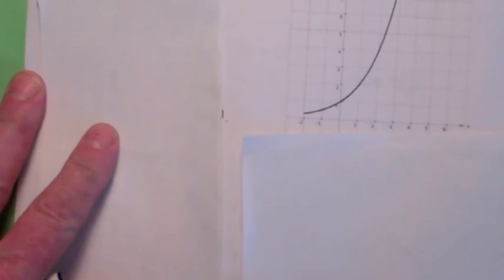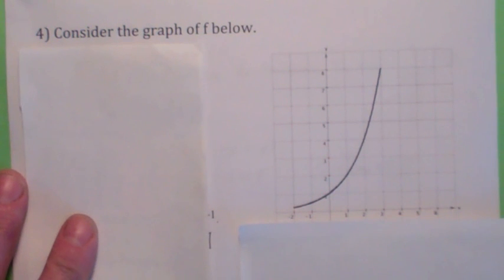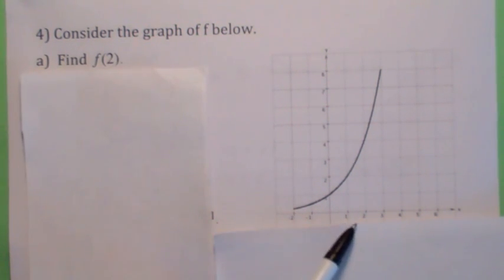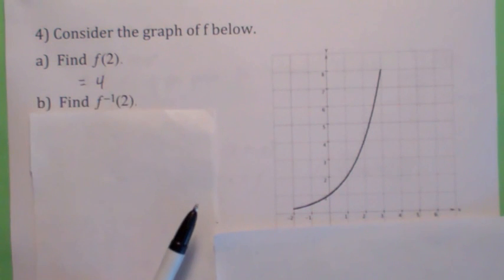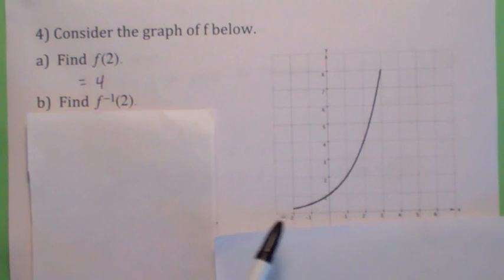Well, let's look at this graph. First question is, find f of 2. Remember what that is? Value of y when x is 2. Looks like 4. What's f inverse of 2? f inverse of 2 is the value of x when y is 2. Looks like 1, doesn't it?